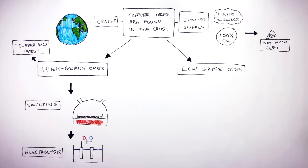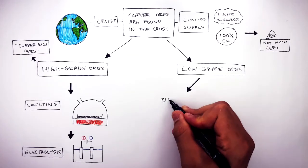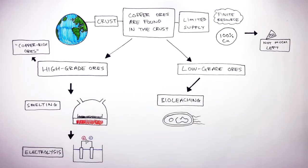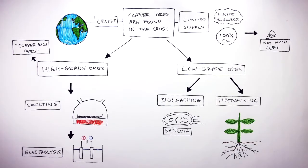Whereas low-grade ores are ores which have a low percentage of the metal in the ore. Two techniques used to extract copper from low-grade ores are bio-leaching, which involves the use of bacteria and other microorganisms, and phytomining, which involves the use of plants.